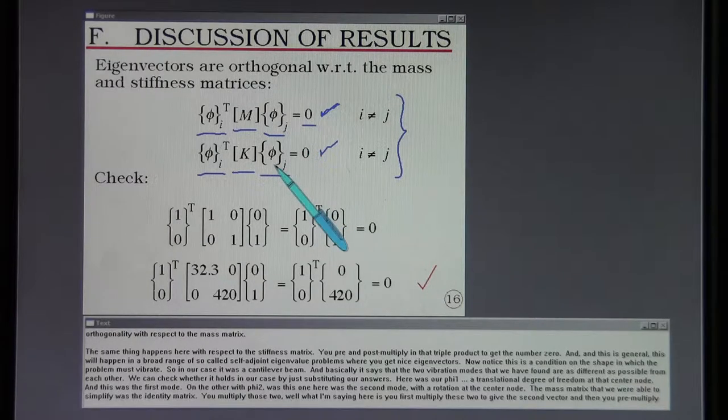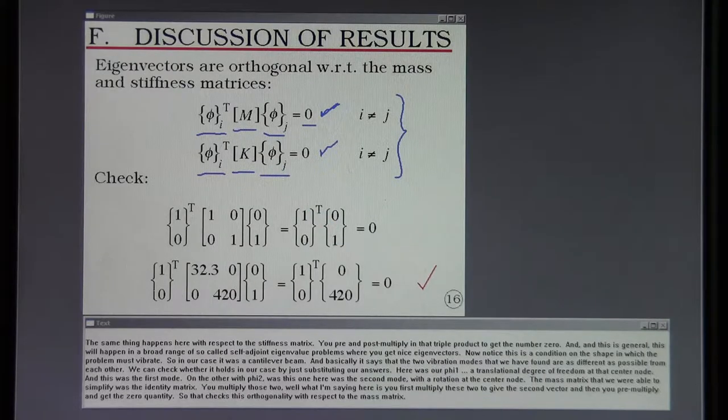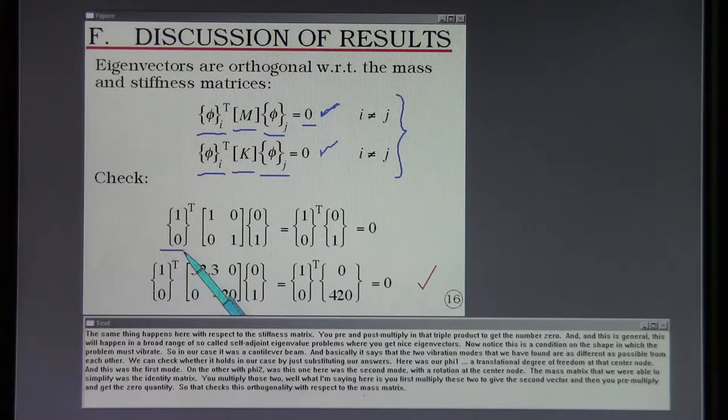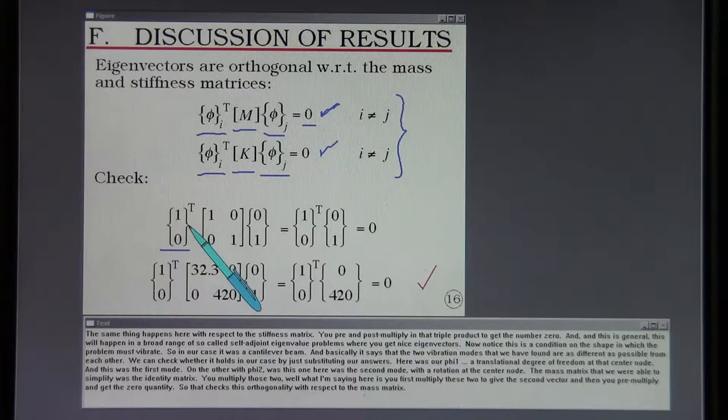This will happen in a broad range of so-called self-adjoint eigenvalue problems where you get nice eigenvectors. Notice this is a condition on the shape in which the problem must vibrate. In our case it was a cantilever beam. Basically it says that the two vibration modes that we have found are as different as possible from each other. We can check whether it holds in our case by just substituting our answers. Here was our phi1, the translational degree of freedom at that center node. This was the first mode.